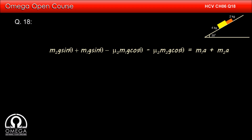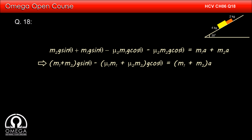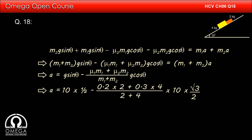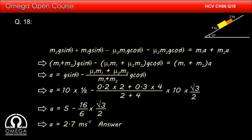Adding equations 1 and 2, we get: M2g sin theta + M1g sin theta − mu1·M1g cos theta − mu2·M2g cos theta = (M1 + M2)·a. Therefore, a = g·sin theta − (mu1·M1 + mu2·M2)·g·cos theta / (M1 + M2). Putting in the values: a = 10×(1/2) − (0.2×2 + 0.3×4) / (2 + 4) × 10×(√3/2) = 5 − (16/6)×(√3/2) ≈ 2.7 m/s². This is the answer for part (a).